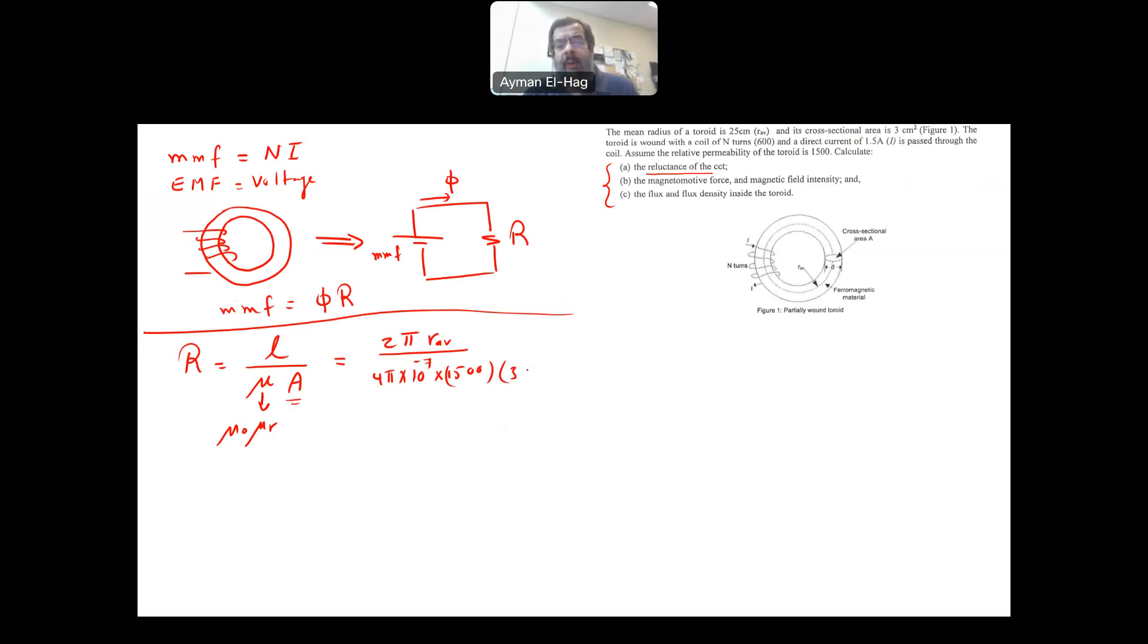We have to convert everything into meters squared. So this is times 10 to minus 4. Substitute there. So it's 2 pi times 25 times 10 to minus 2 divided by 4 pi times 10 to minus 7 times 1500 times 3 times 10 to minus 4.